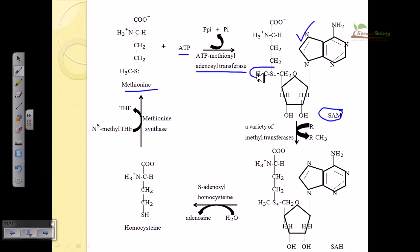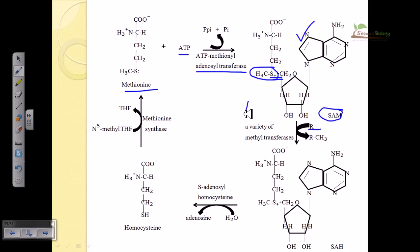SAM contains a sulfonium ion that is electron-deficient, making it electrophilic. A variety of methyltransferase enzymes can come and transfer this methyl group from one moiety to another. For example, if we have moiety R and need to attach a methyl group to it, SAM acts as the methyl group donor — it takes the CH3 from another molecule X and transfers it to R, producing R-CH3.